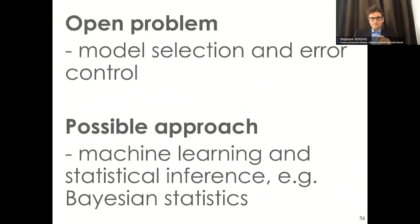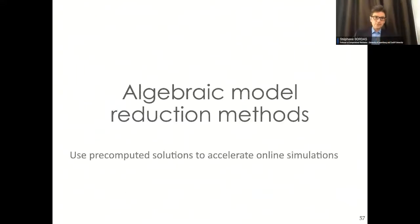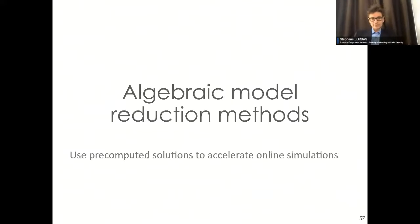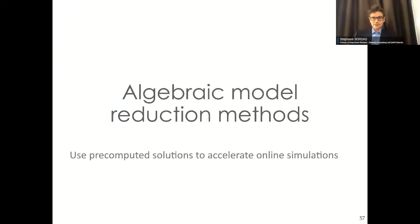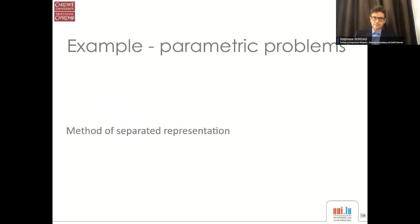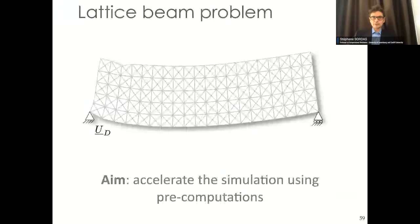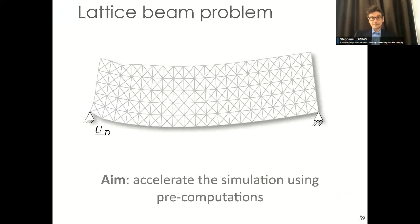Now the second type of approach: algebraic model order reduction methods. The idea here is to use pre-computations. Several students in our team are working on this. The idea: you would like to solve a huge problem — imagine one billion degrees of freedom, like the bolted joint — and you want to solve it for a number of load cases because you don't know in advance what the client will ask. You don't know the loading, just the geometry and the displacement boundary conditions. You have one week for pre-computation, such that when the client comes with the actual loading, you can give the answer within a few minutes or seconds.